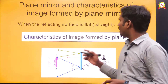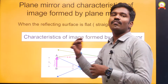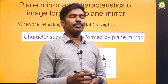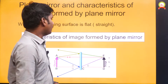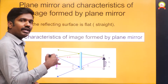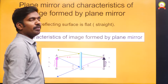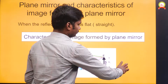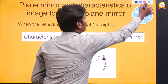What is the meaning of the word plane mirror? Whenever the surface is in the form of a flat, straight surface, those kinds of mirrors are called plane mirrors. Now we will see the various characteristics of the image formed by a plane mirror.